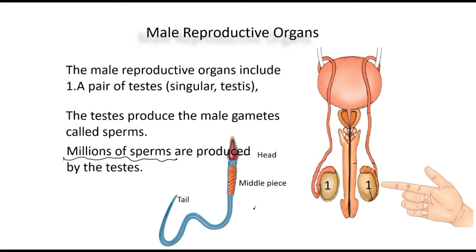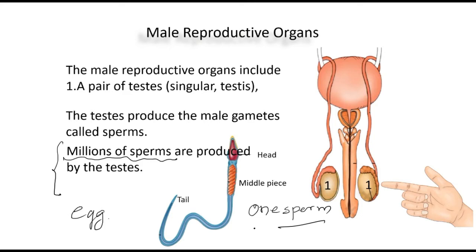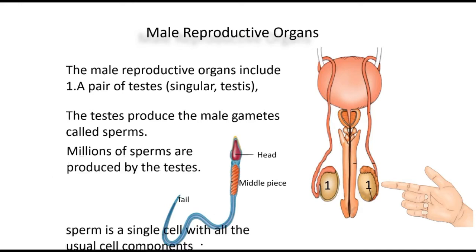For the formation of a zygote, we require only one sperm. From the father there will be millions of sperms, but only one sperm will be able to fuse with the egg from the mother. We are all born due to one sperm and one egg. The rest of the sperms will die and go out. Remember, sperm is a single cell with all usual components — nucleus and all those things.